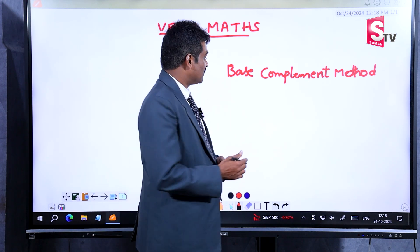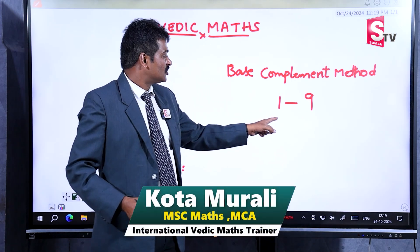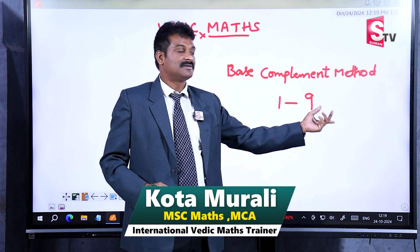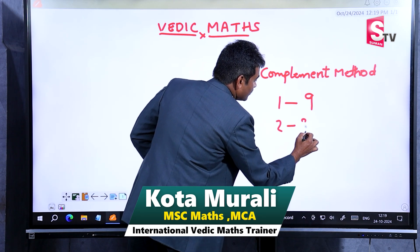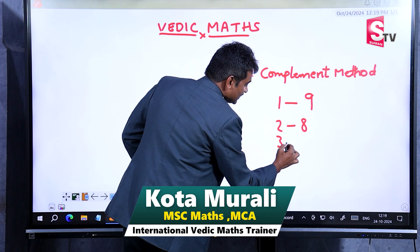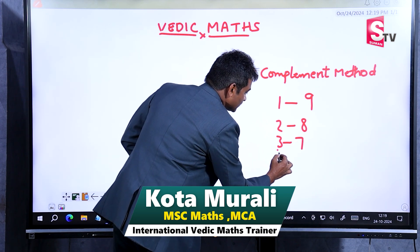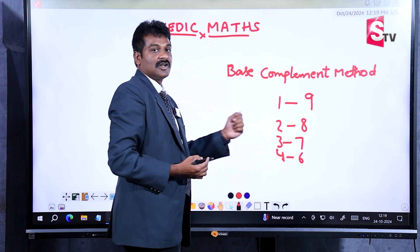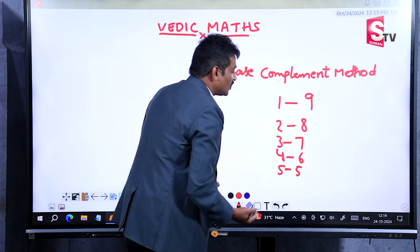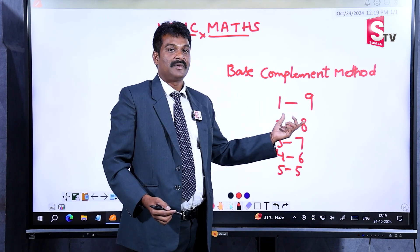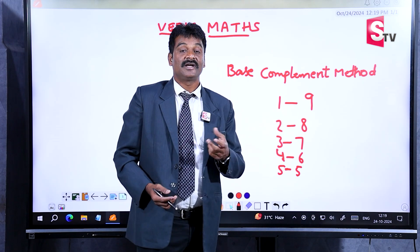Complement in Vedic Math — it is simply called: suppose if you add two numbers, suppose 1 plus 9, the addition should be 10. It is simply called a base complement. So 2 plus 8 is 10, 3 plus 7 is 10, 4 plus 6 is 10, 5 plus 5 is 10. These are all called complements. Complement means the addition of two numbers should be equal to 10.